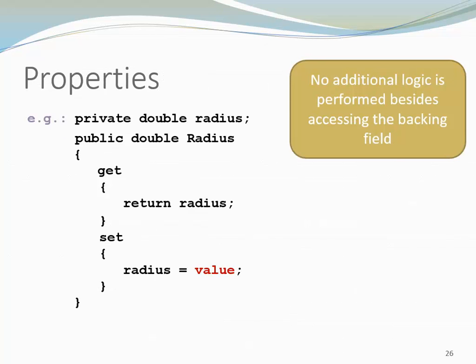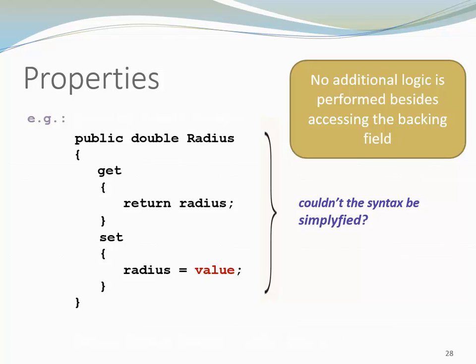Now let's have a second look at the simple example of the radius that we had before. No additional logic has been performed besides accessing the backing field. So this property is the counterpart to having getters, setters automatically generated by an IDE in Java. In such a situation, we ask ourselves, couldn't the syntax be simplified? Couldn't the backing field be generated automatically? And also the code blocks of the get and set.